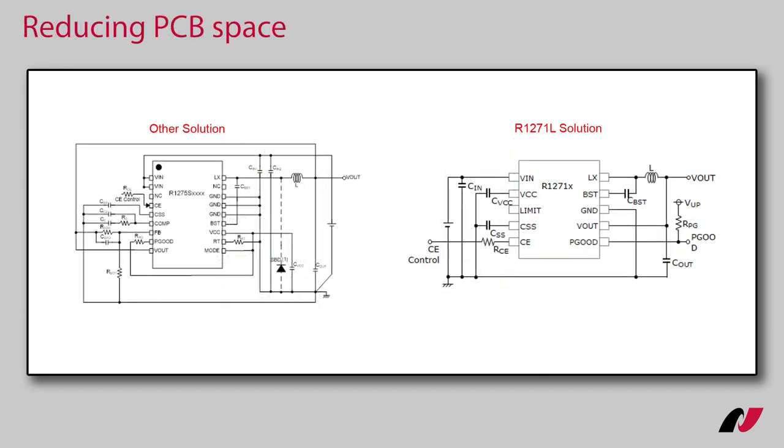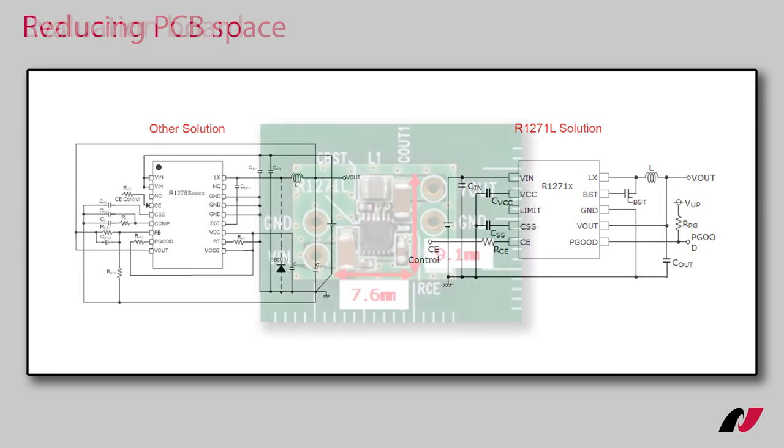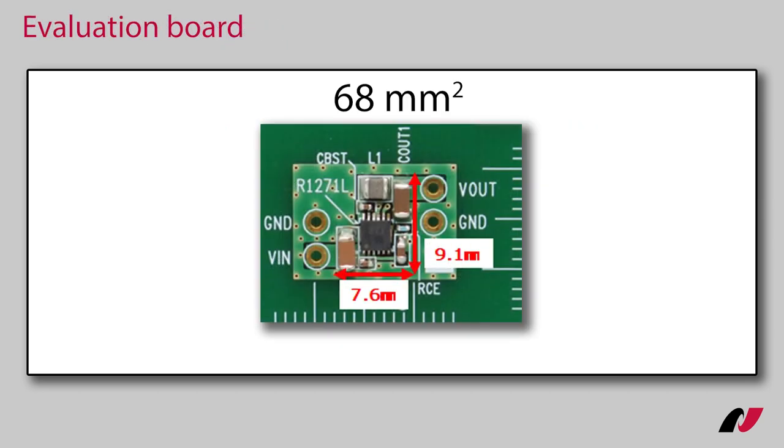The R1271 has several measures to reduce circuit board space, such as phase compensation and output voltage settings are set internally, reducing the number of external components, 2 MHz operating frequency, a 3 by 3 mm DFN package, and small external components. It all results in a total board space of 68 mm².